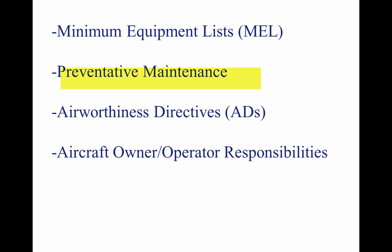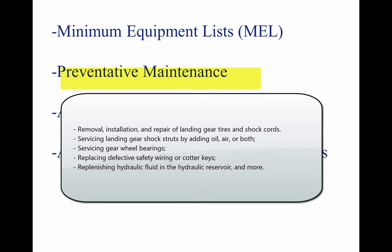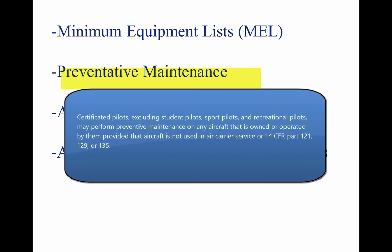Preventive maintenance is limited to work that does not involve complex assembly operations and includes: removal, installation, and repair of landing gear tires and shock cords; servicing landing gear shock struts by adding oil, air, or both; servicing gear wheel bearings; replacing defective safety wiring or cotter keys; and replenishing hydraulic fluid in the hydraulic reservoir. Certificated pilots, excluding student pilots, sport pilots, and recreational pilots, may perform preventive maintenance on any aircraft they own or operate, provided that aircraft is not used in Air Carrier Service or under 14 CFR Parts 121, 129, or 135.